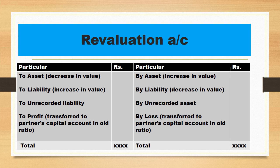Now the question arises: which type of expenses and losses, and which type of income and gains go where? If the value of any asset decreases, it will be termed as loss, so we write it on the debit side with the amount of decrease. Whenever there is an increase in liability, it will also be termed as loss, so we write it on the debit side with the increase value of liability. When we find any unrecorded liability at the time of reconstitution, it will also be recorded on the debit side of revaluation account.